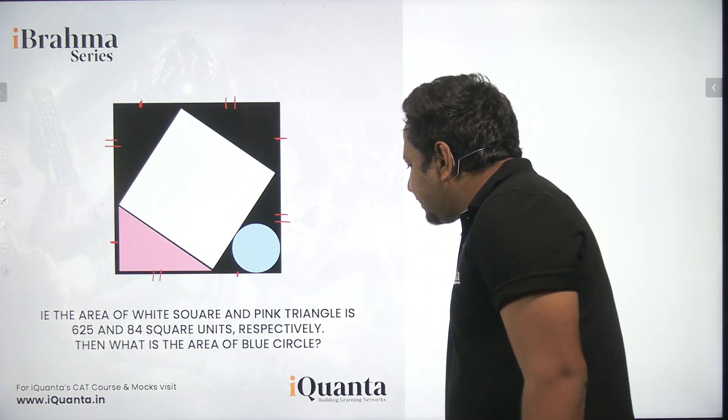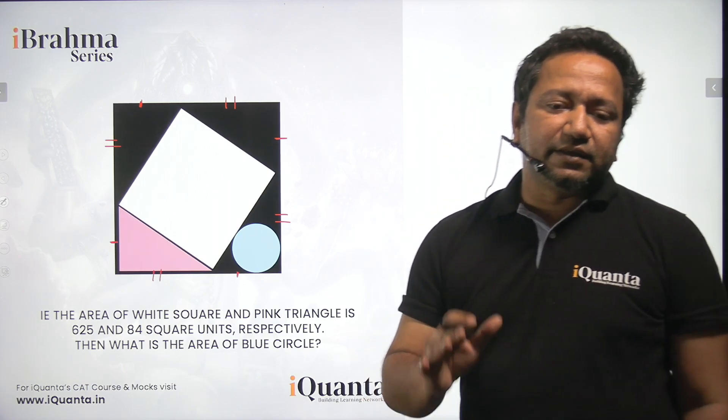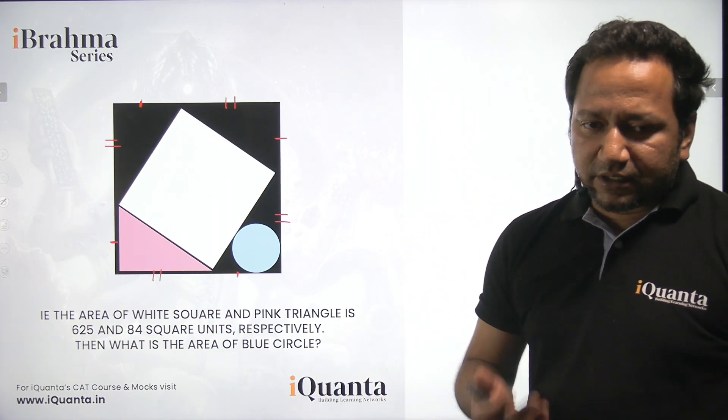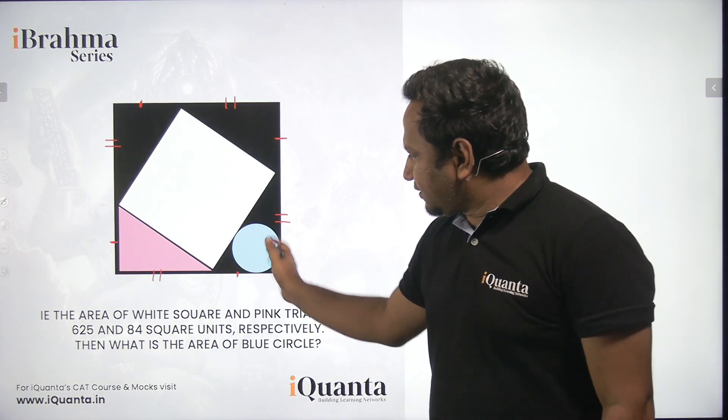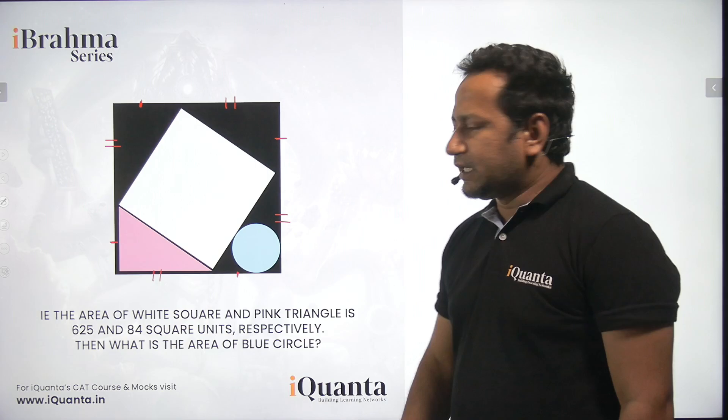If the area of white square and pink triangle is 625 and 84 square units respectively, then what is the area of blue circle? So that is what we have to find out. The colors are brilliant and we can identify all the figures with their colors.